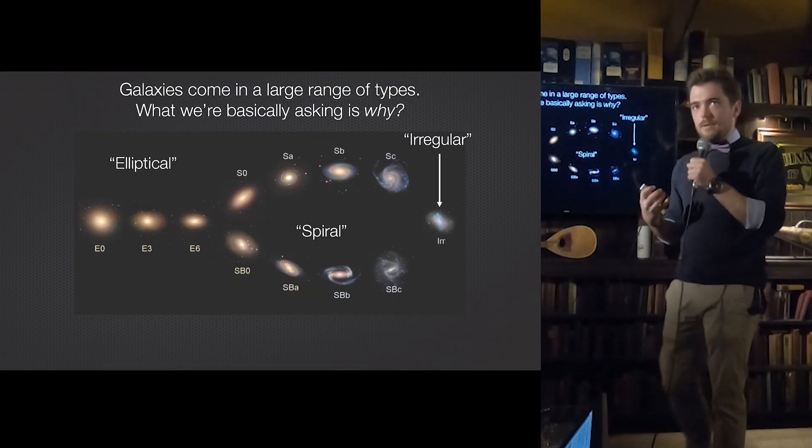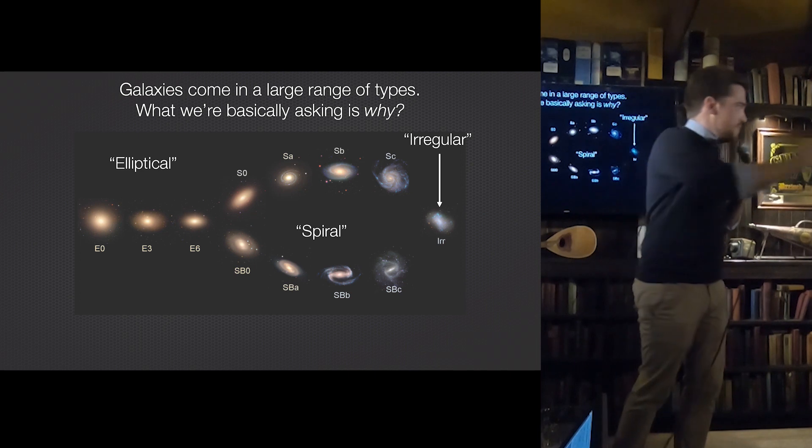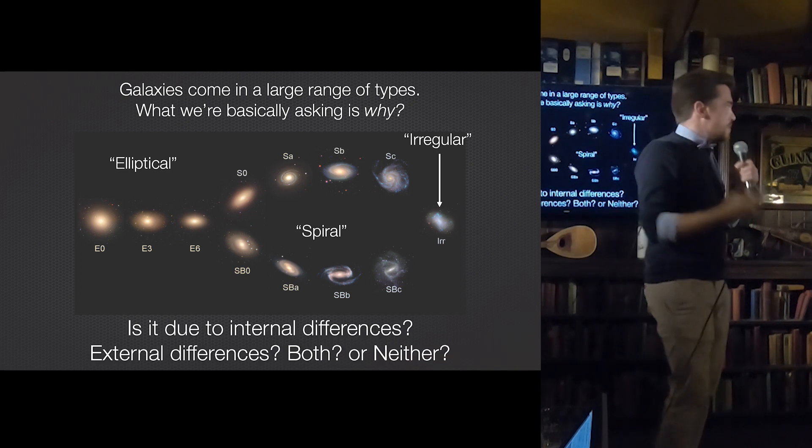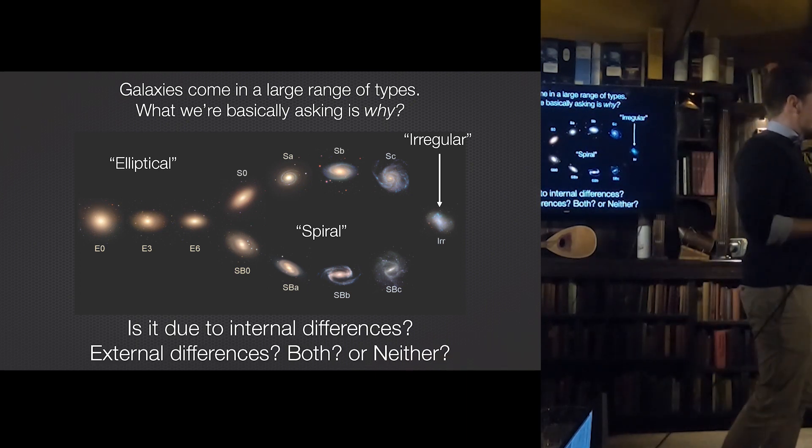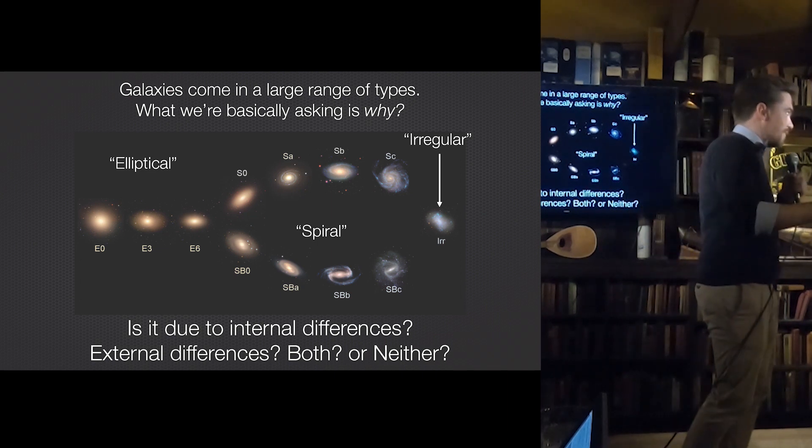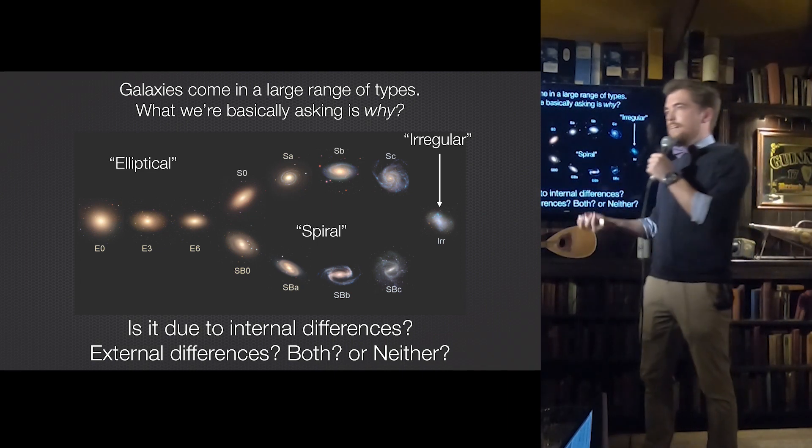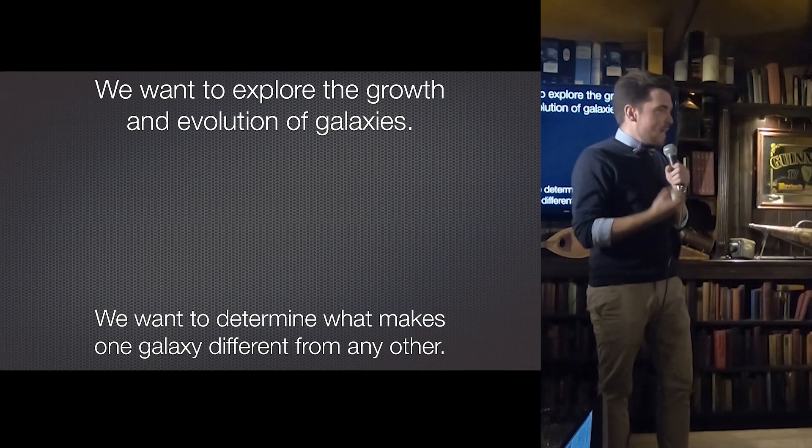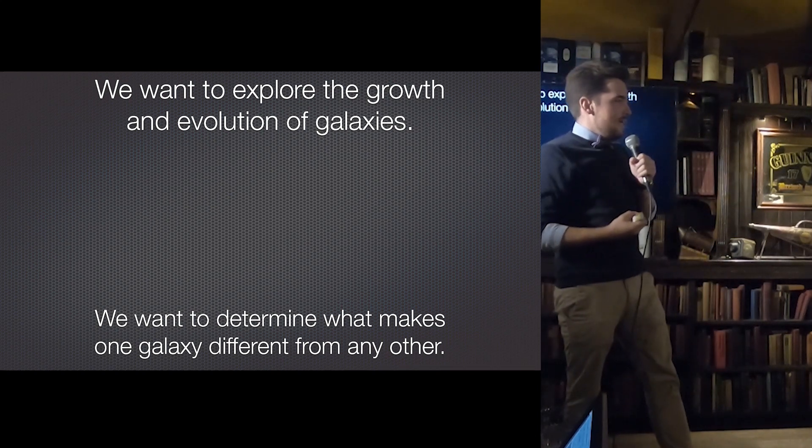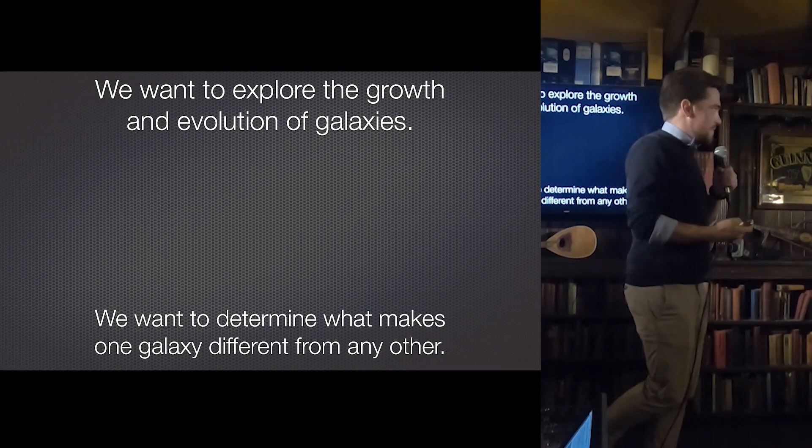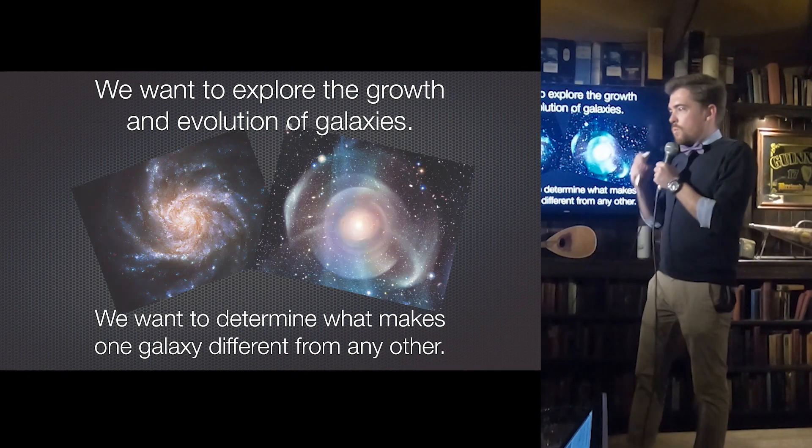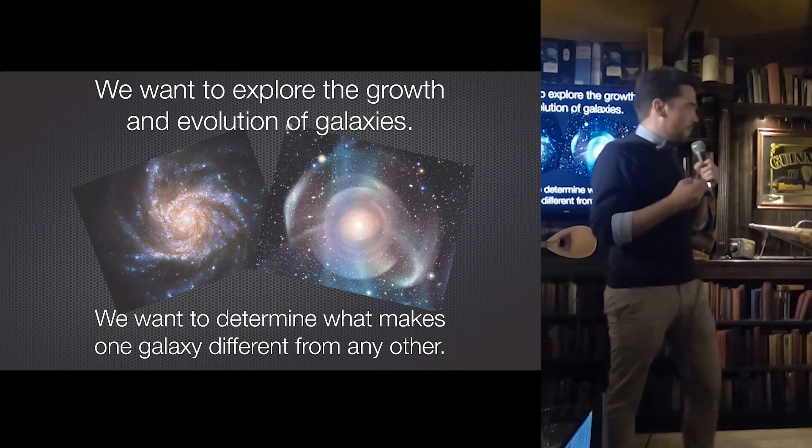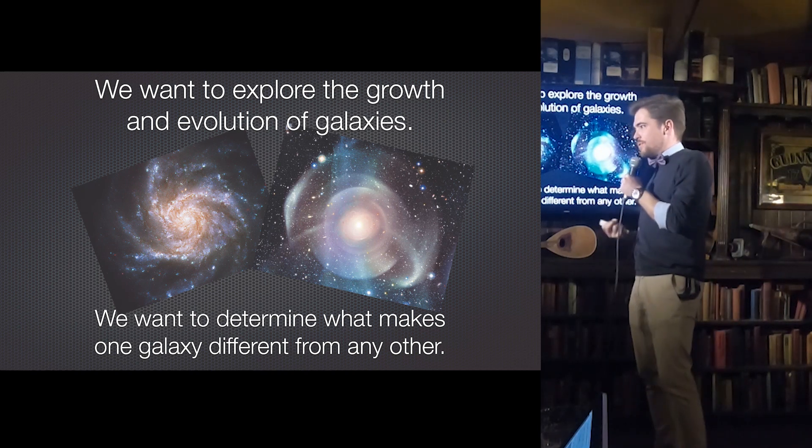So the question doesn't just become, do galaxies interact with one another and become the way that they look? Or is it just something internal? It's a combination. Are the differences that we see in galaxies due to internal effects, external effects? Both? Maybe neither. Maybe it's something that we haven't even begun to consider yet. And so the question that we really want to ask when we say, why does the Milky Way look the way that it does, is why does any galaxy look the way that it does? We want to explore how galaxies grow and evolve over the age of the universe.